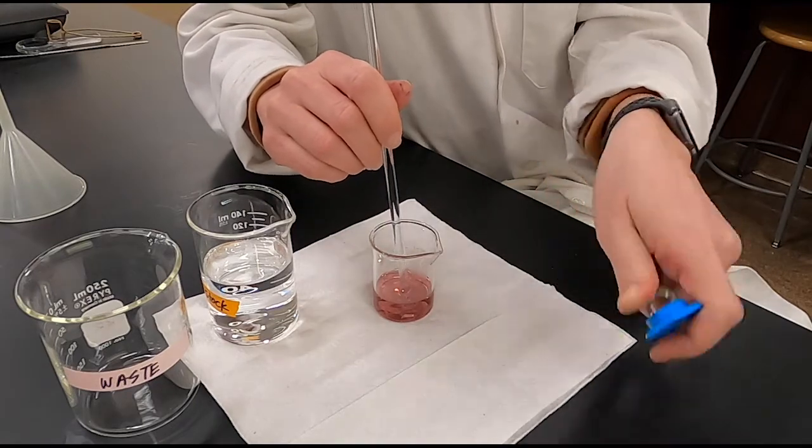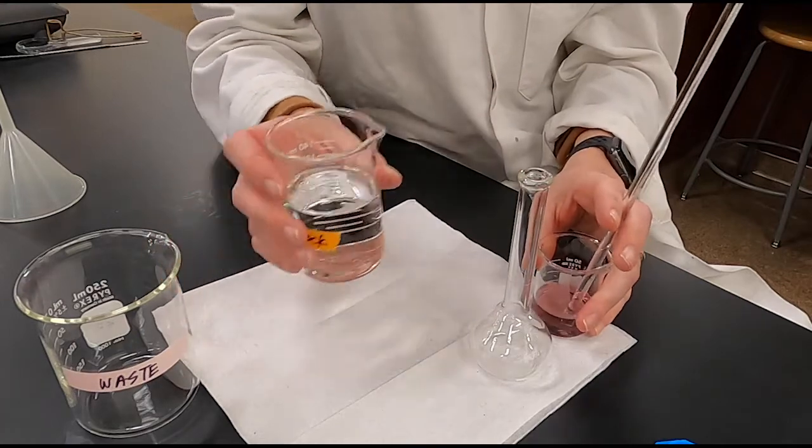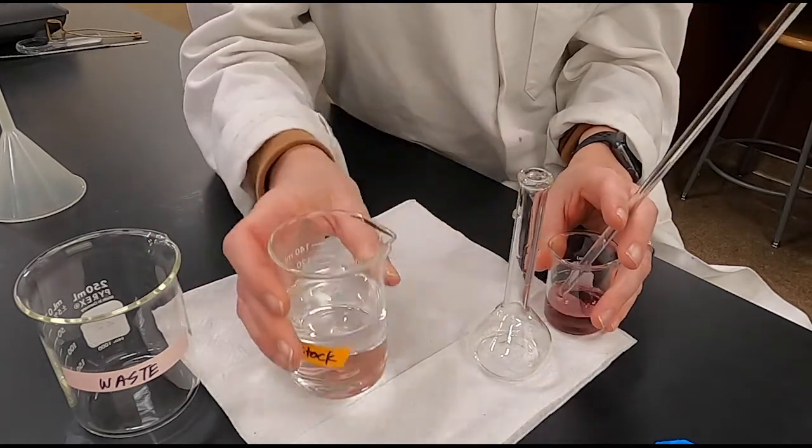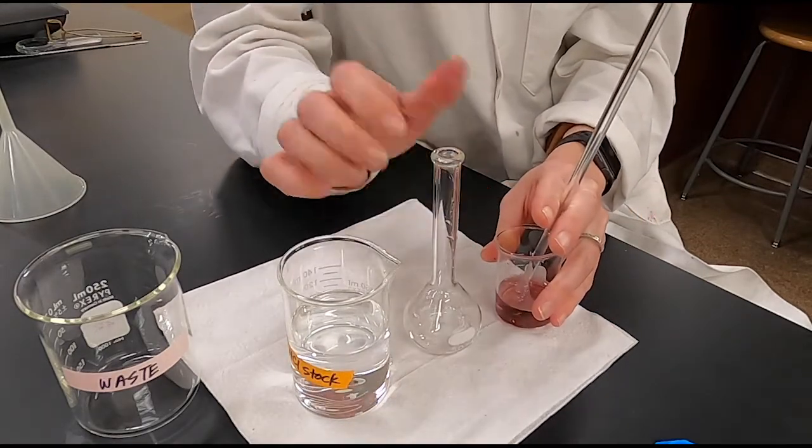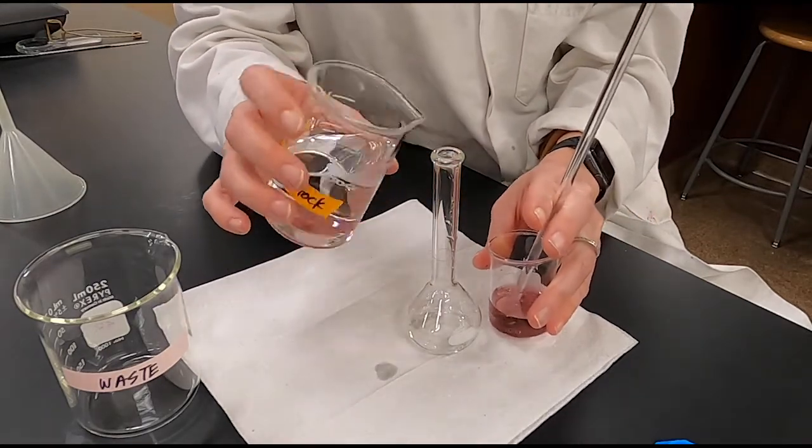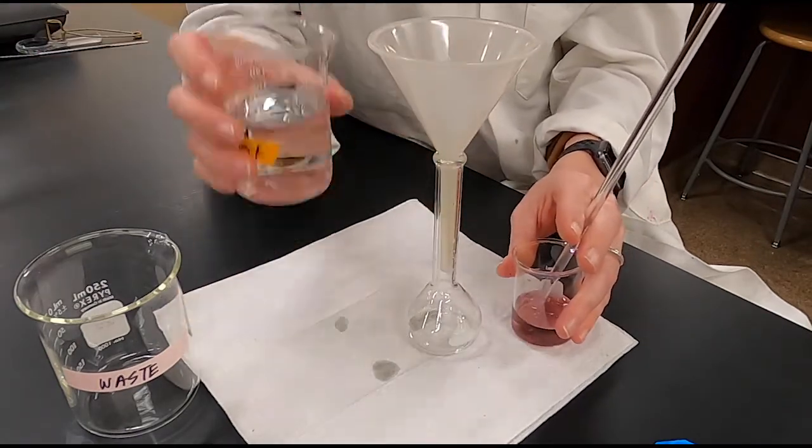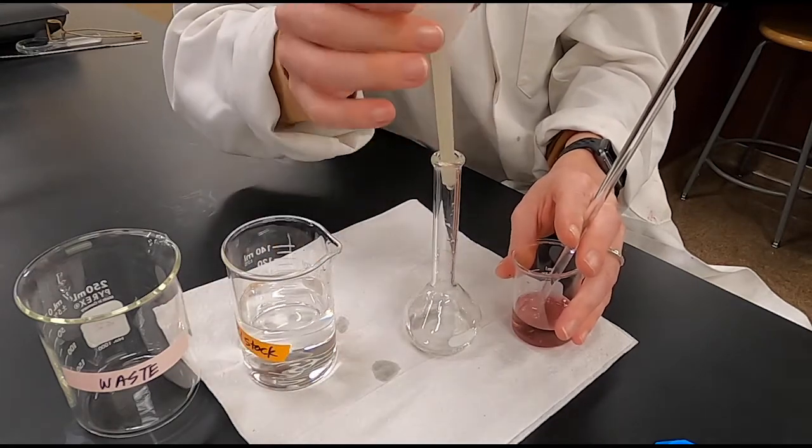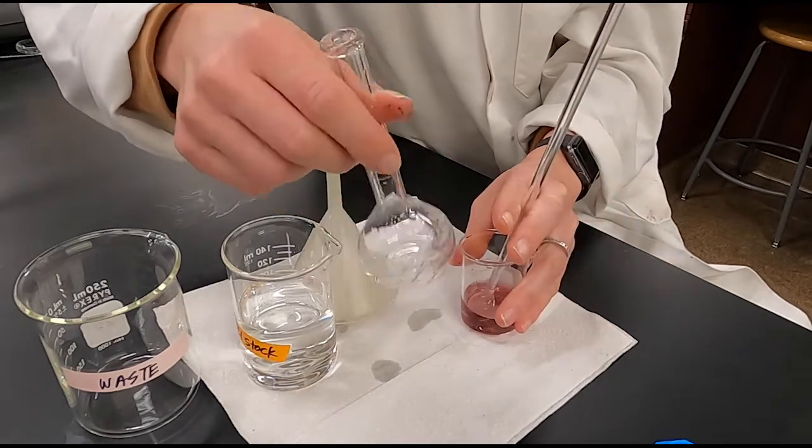I'm about ready to transfer it to this volumetric flask. We're going to do a quantitative transfer, so notice that I'm not putting the stir rod down on the paper towel because I don't want to lose any of my solution. I'm going to make sure that all of that gets transferred into the volumetric flask. The volumetric flask has some water droplets inside, so I'm just conditioning it with the hydrochloric acid solution since that's what we're using as our solvent.